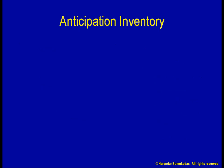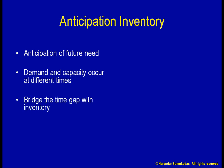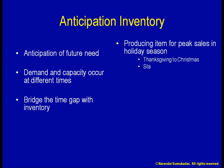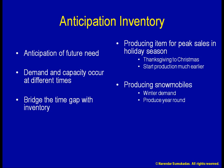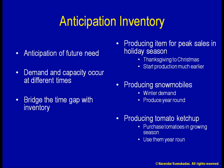Another form of inventory is anticipation inventory. This kind of inventory is built up in anticipation of future need. Demand and capacity occur at different points on the timeline, and we are attempting to bridge this time gap using inventory. Suppose we are producing an item that sells primarily during the holiday season from Thanksgiving to Christmas. We start our production several months in advance and build up inventory in anticipation of future demand. The greater the time shift, the greater the amount of inventory needed.